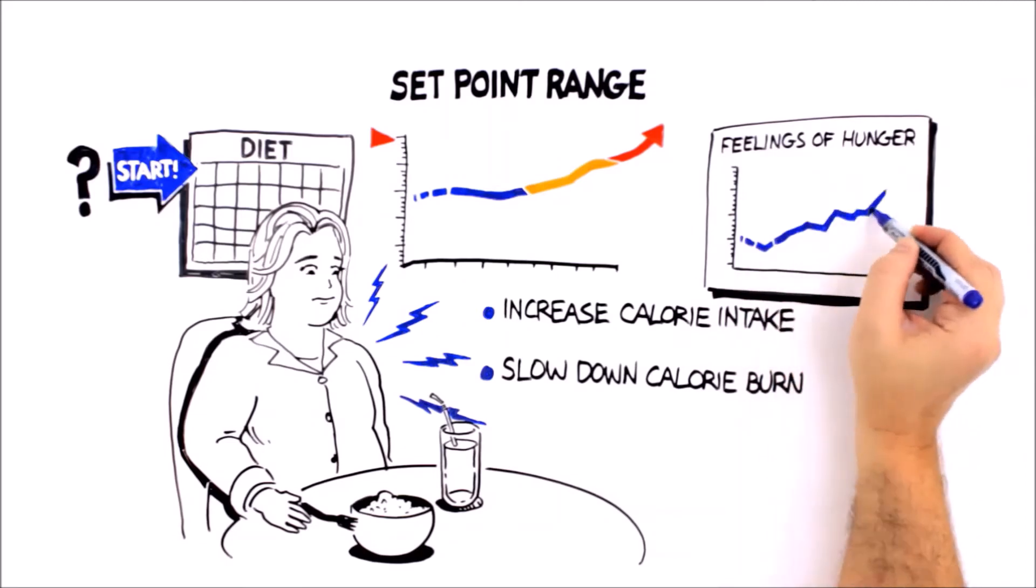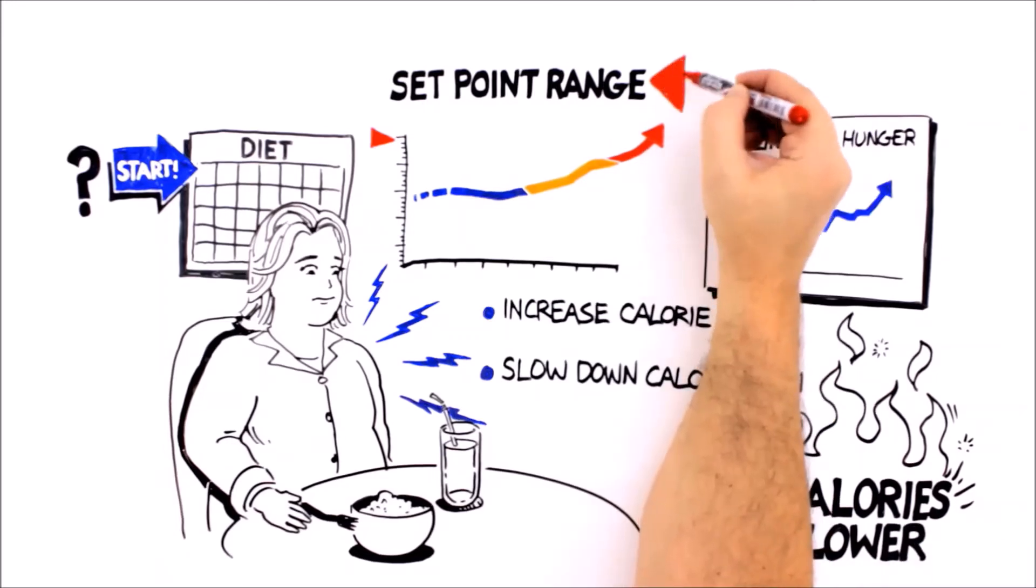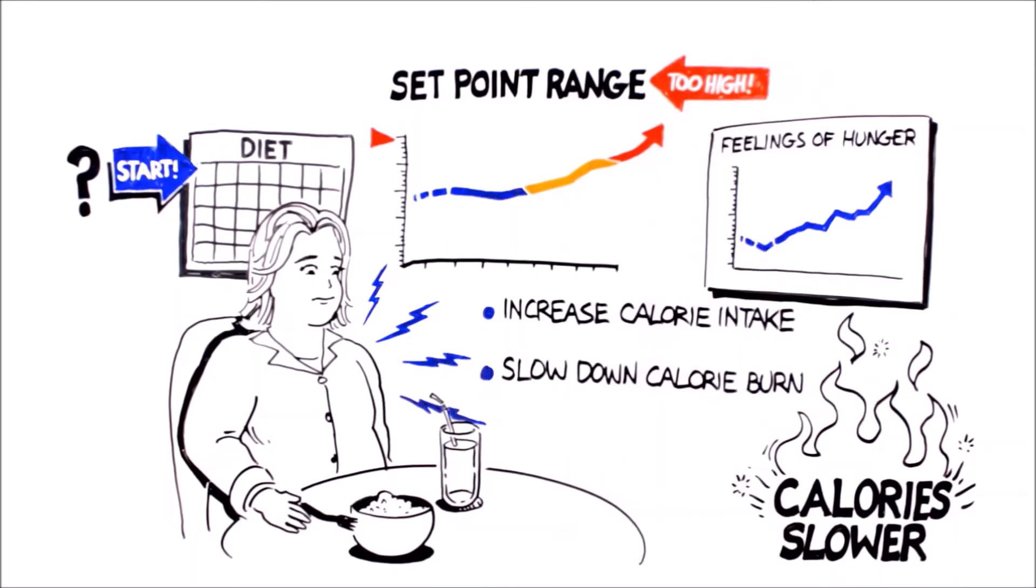She feels hungrier, and although she doesn't know it, she's also burning calories slower than before. Amanda's body doesn't recognize that her set point is too high and her weight is unhealthy. It only knows to defend her current set point.